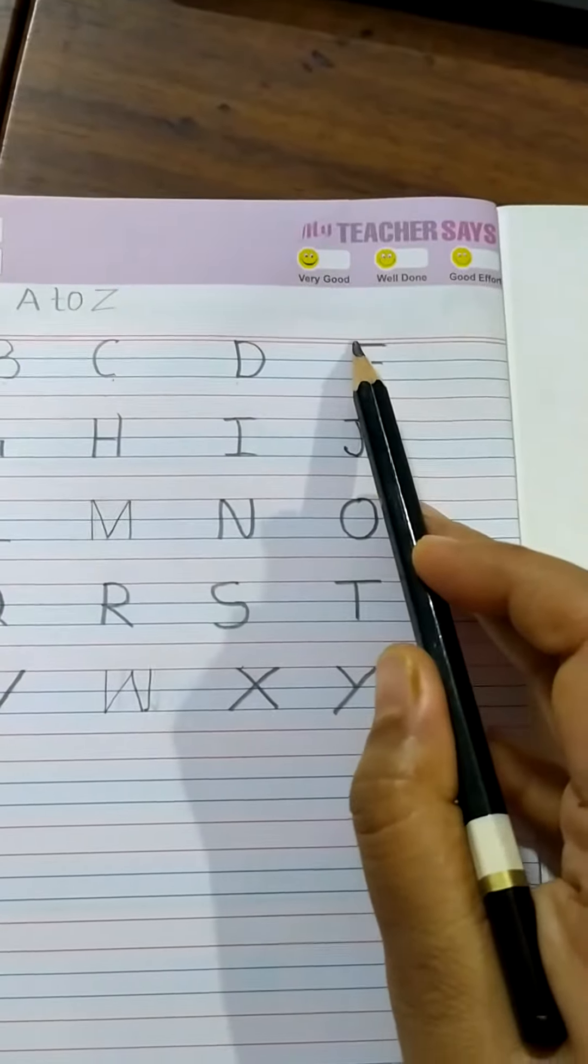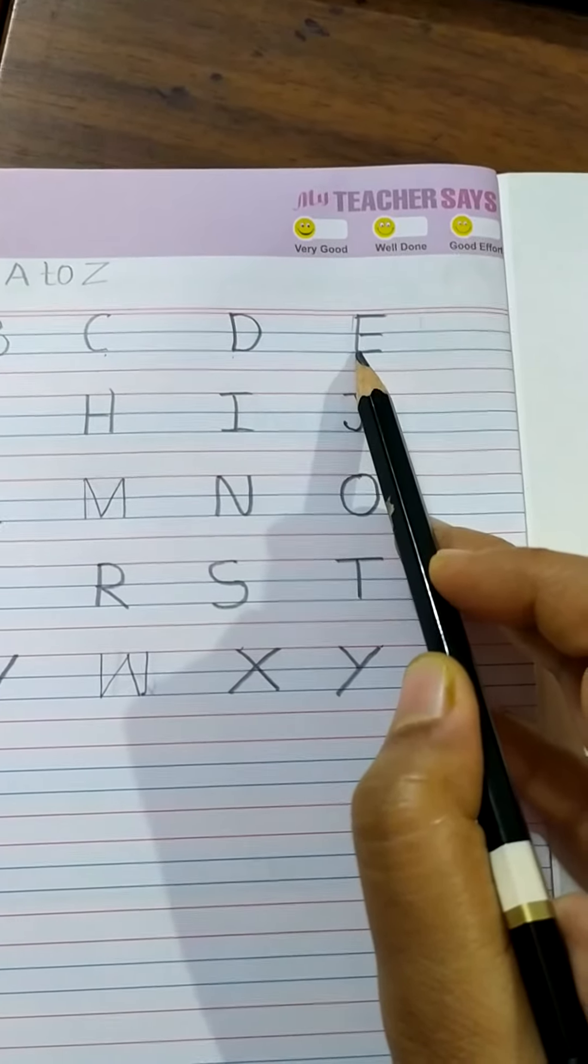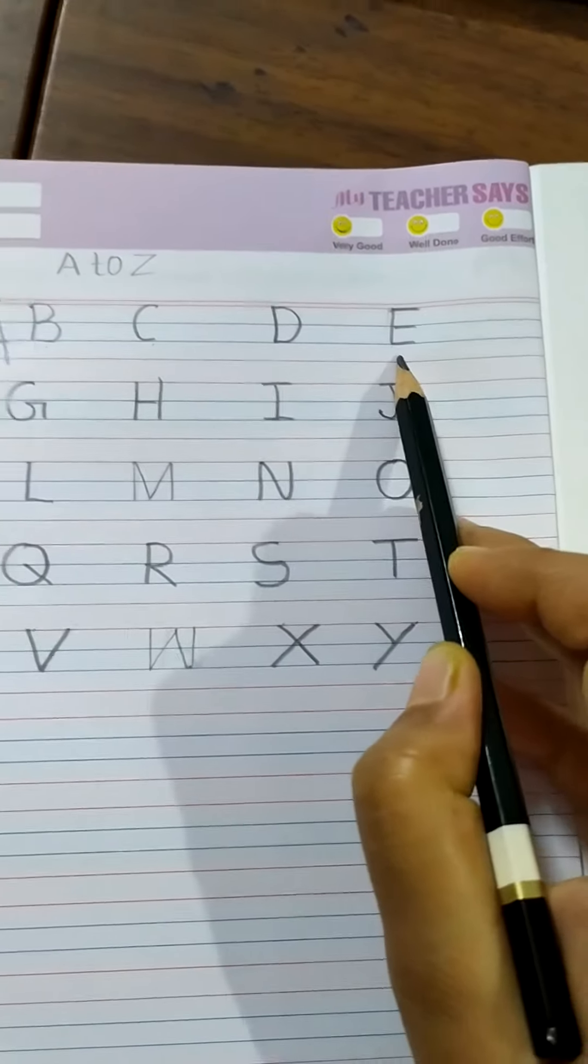And how you should write letter E? Put here red line to blue line, one standing line and three sleeping line you should put. This is letter E.